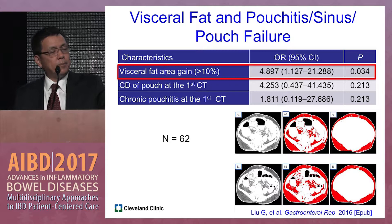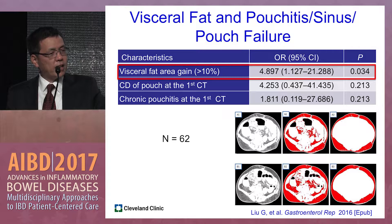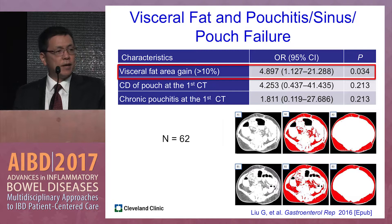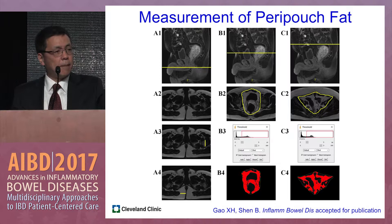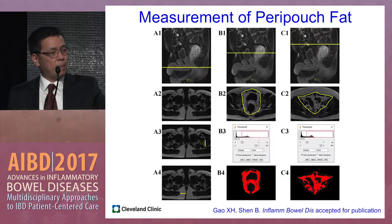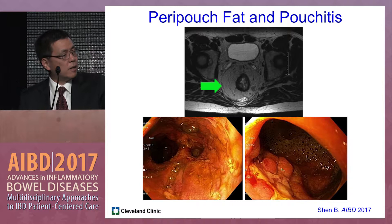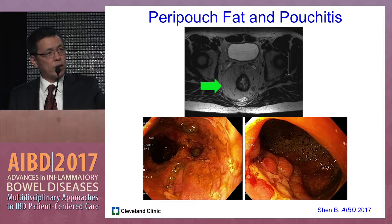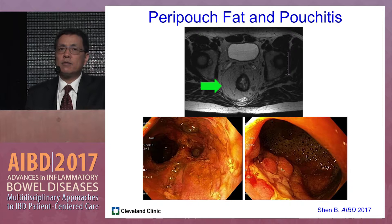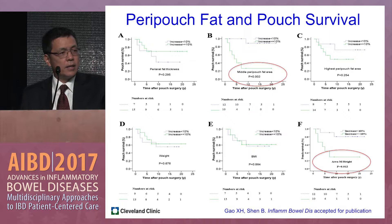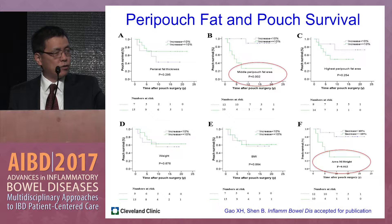Visceral fat gain of more than 10% is associated with pouch failure, sinus, or pouchitis. We use MRI to measure fat around the pouch. In a classic example, a patient with distal pouchitis and cuffitis had significant fat accumulation around the pouch. Fat is not merely a passive organ — it is an active organ producing cytokines and pro-inflammatory mediators. Pouch fat gain is also associated with pouch survival.